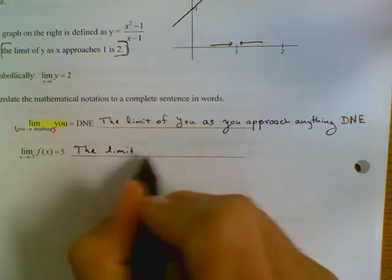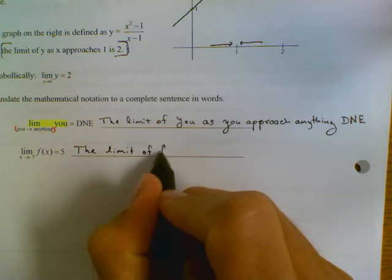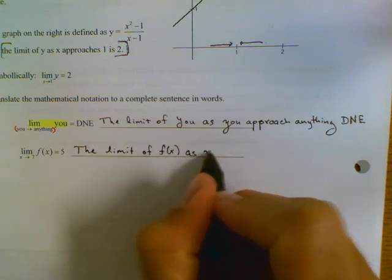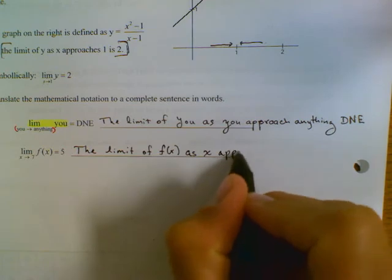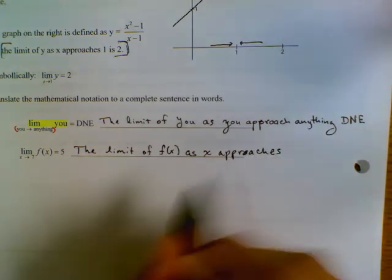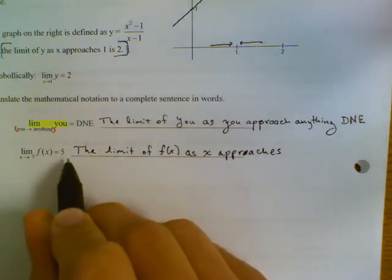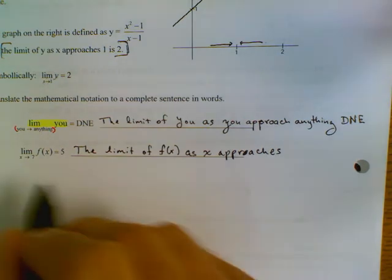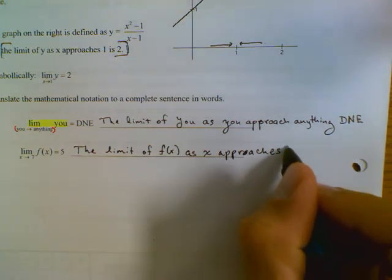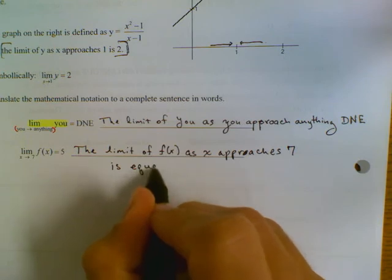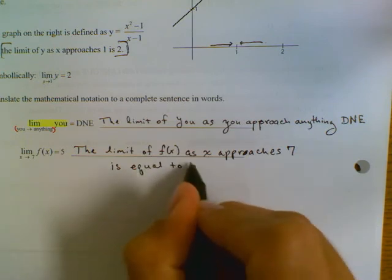Trusting that that's done, we're going to say the limit of the function f of x as x approaches, as x gets closer and closer to 7. The limit of f(x) as x approaches 7 is equal to 5.